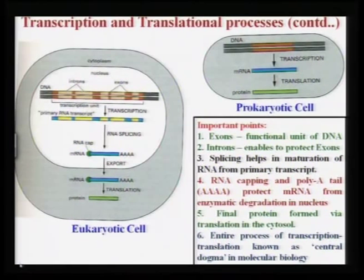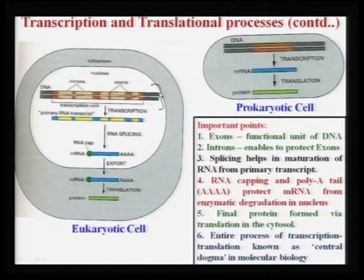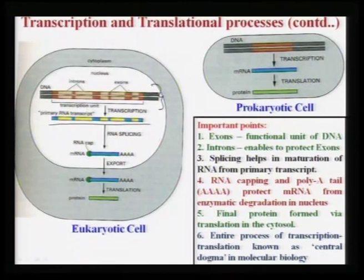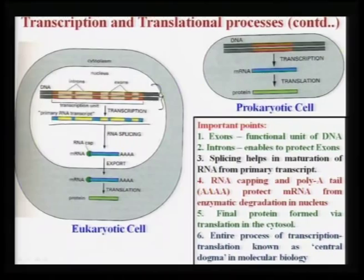If the DNA double strand is broken, the translational process is also affected. Inside the nucleus, double-strand DNA undergoes transcription. During transcription, the double strand dissociates and forms a single-strand RNA molecule. There are two things requiring explanation: exons and introns. Exons are the functional units, and introns serve to protect exons. The expression of exons in DNA remains similar in the corresponding RNA.